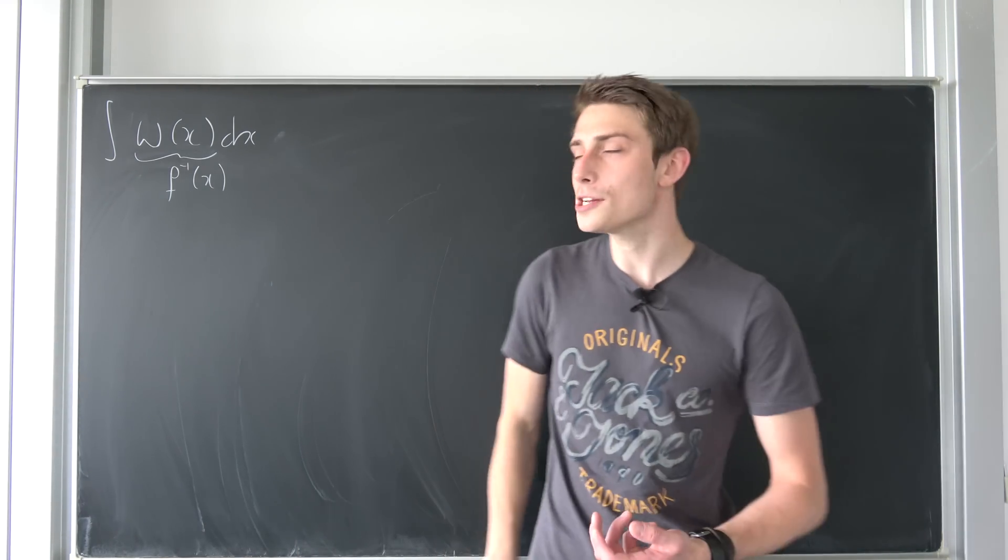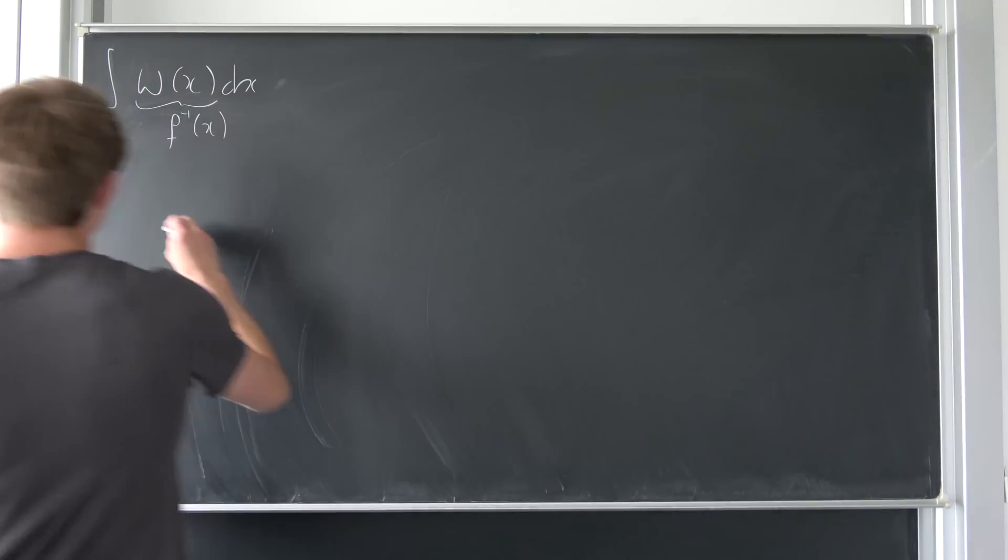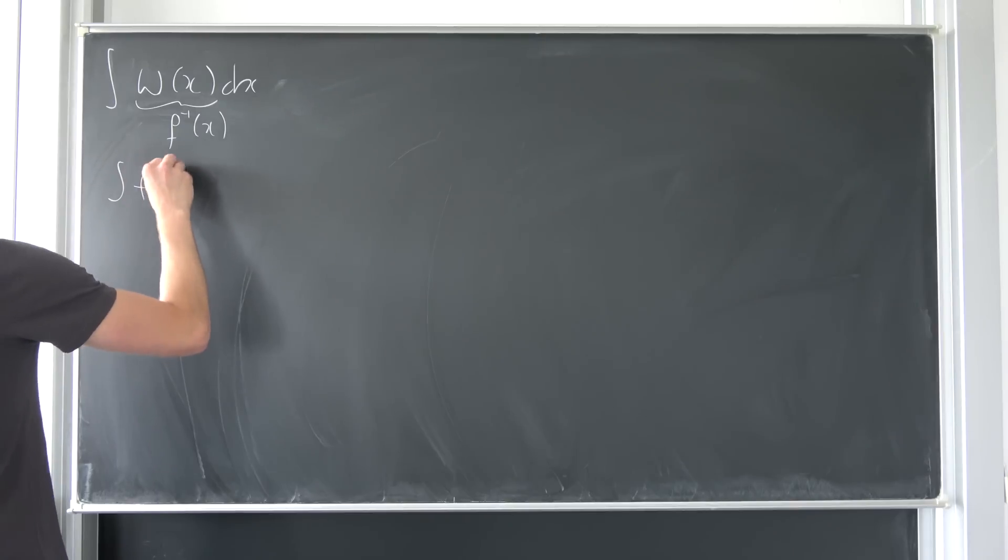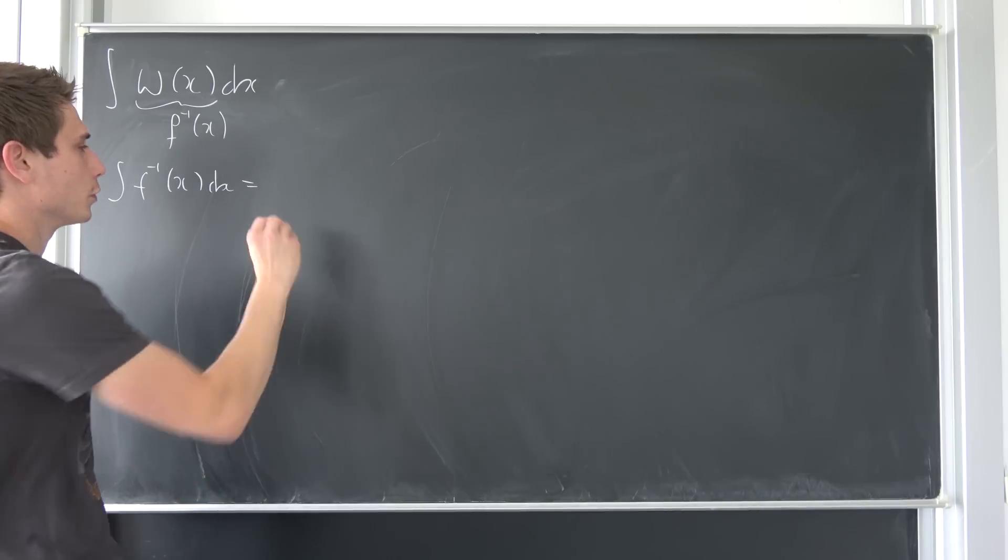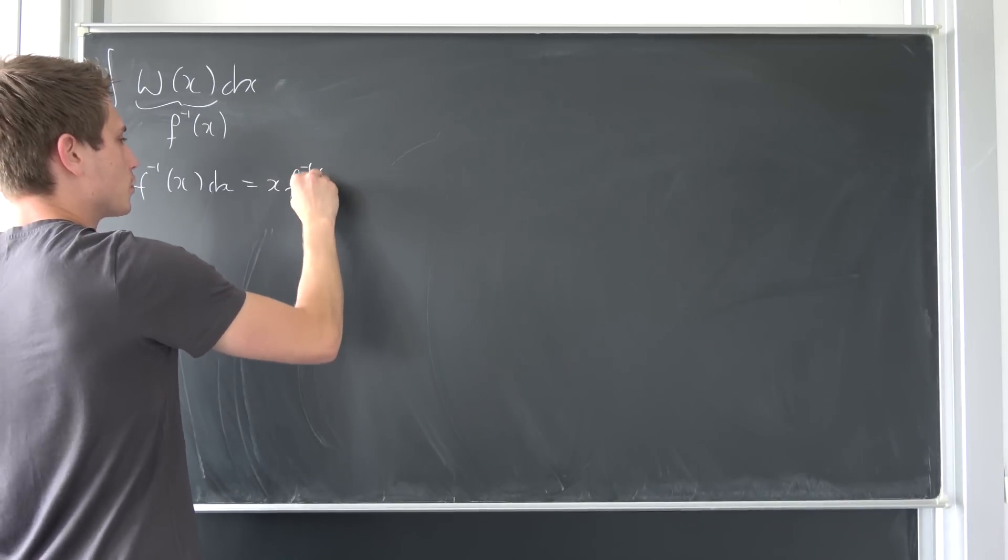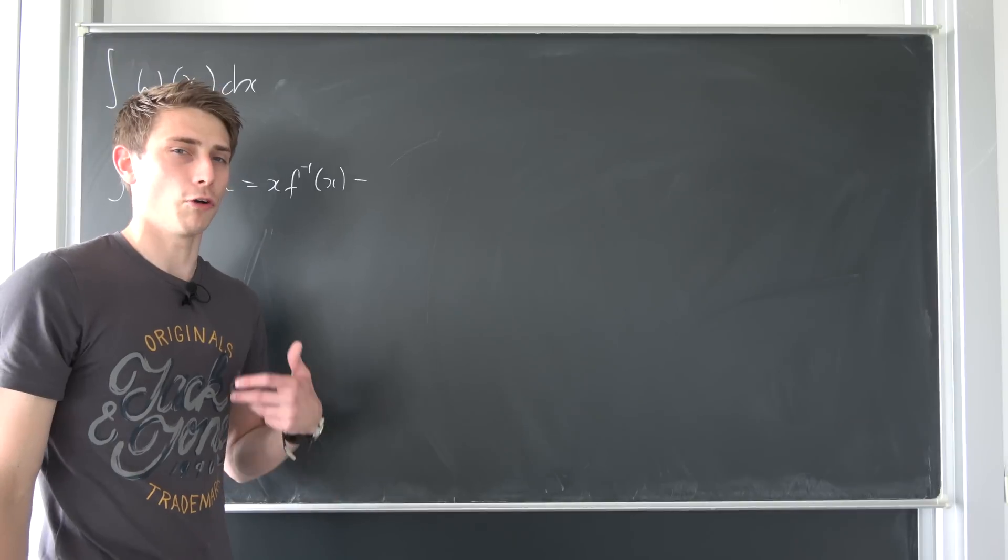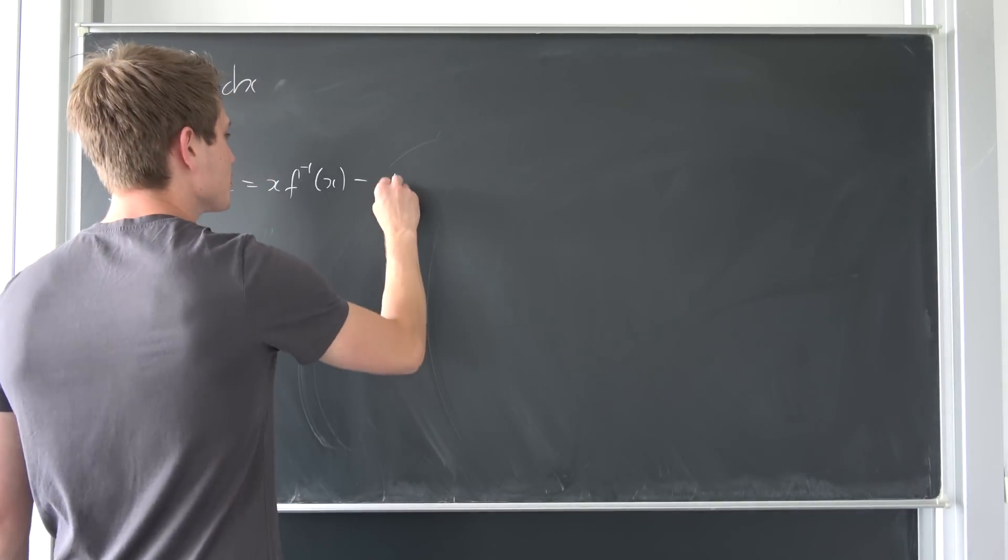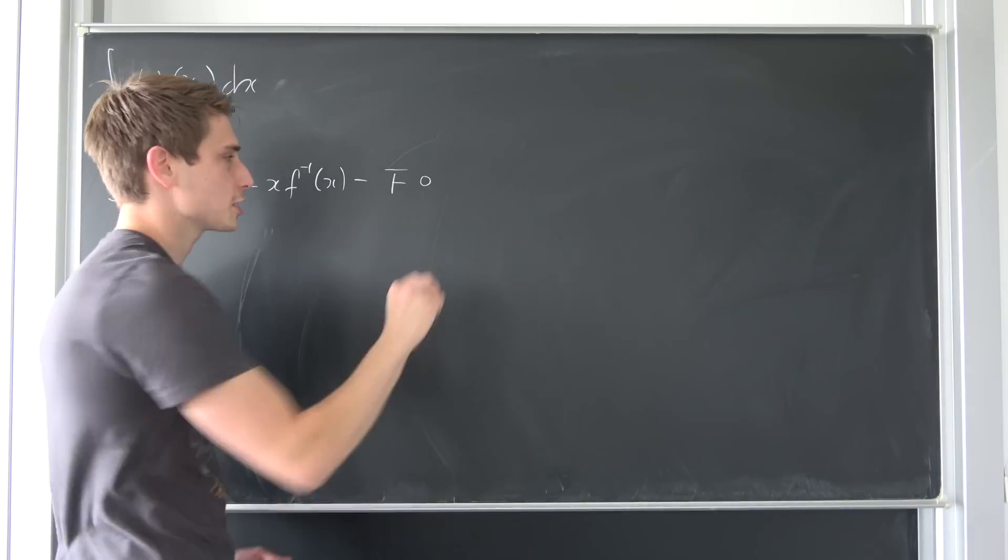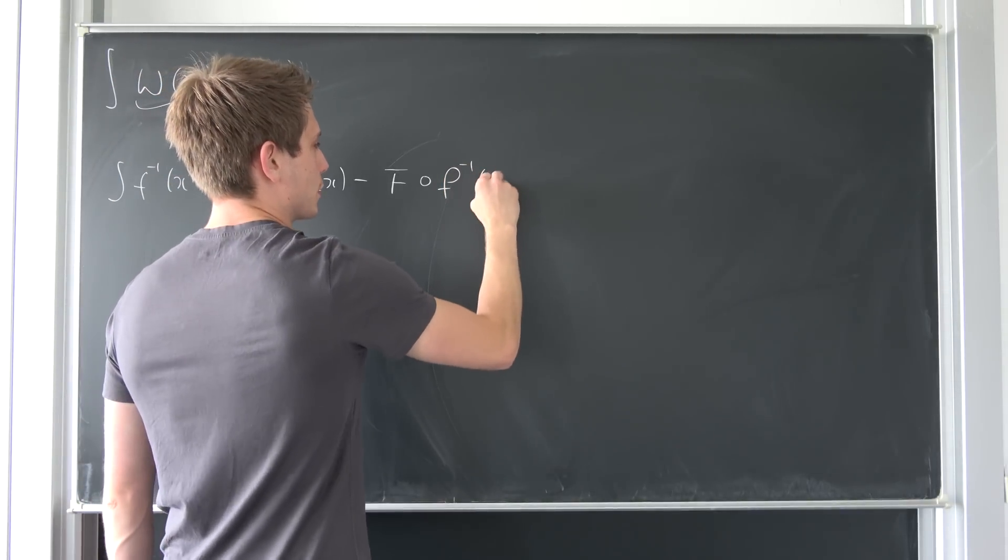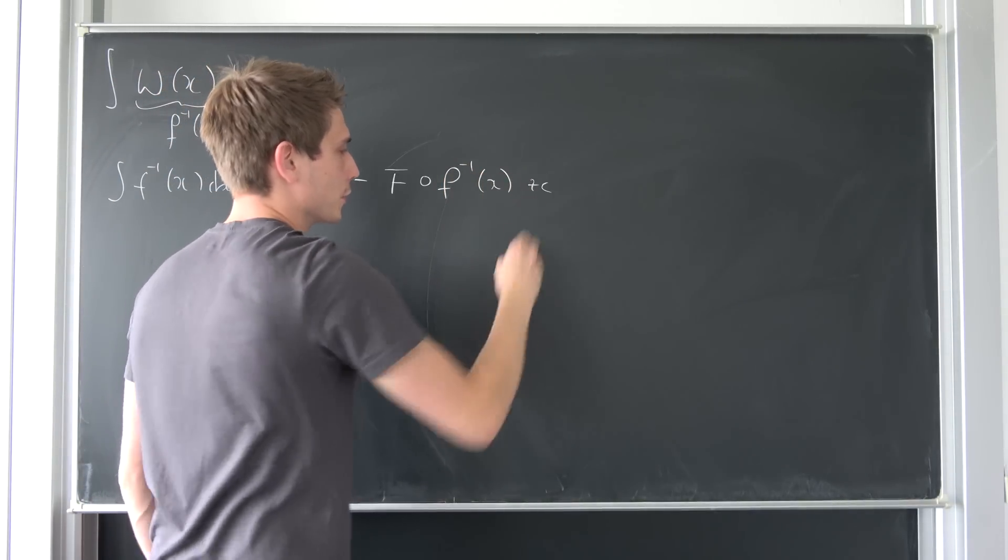We have learned a little formula before. If we want to integrate an inverse function with respect to x, we are just going to end up with x times the inverse function, minus the anti-derivative of the inverse function, in composition with the inverse function, plus some arbitrary constant c.